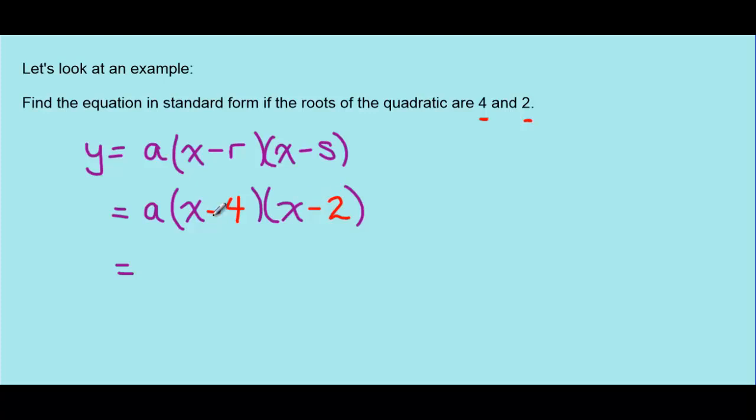So we can foil these brackets here, keep that a out here for now, and we'll foil the brackets. So x times x is x squared, and we'll have a minus 2x, a minus 4x, and a plus 8.